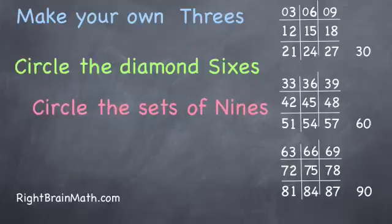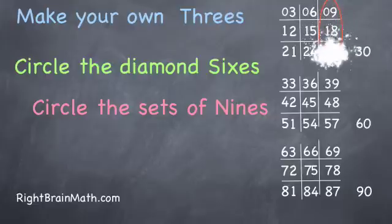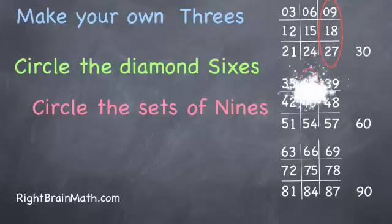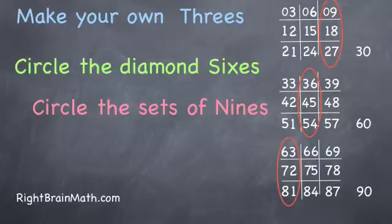Then you can also circle the nines. The right three on the top square, the middle three on the middle square, and the left three on the bottom square. And the ninety actually is also a nine.